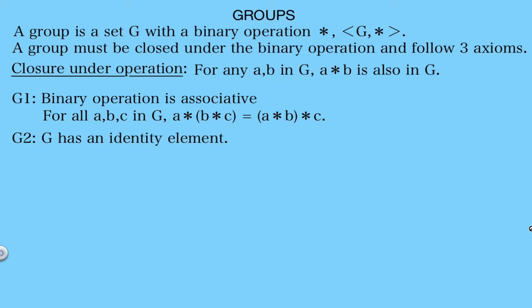The second axiom requires that the group has an identity element. So there must exist an element E in G such that for all X in G, E star X equals X, which equals X star E.